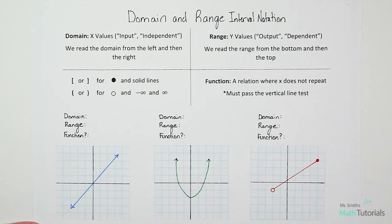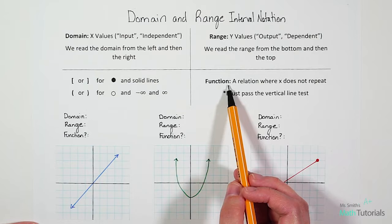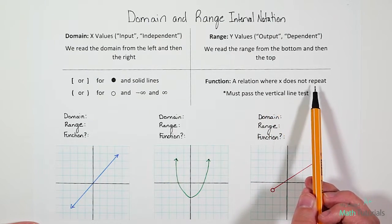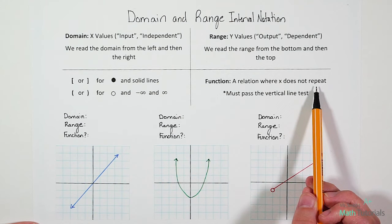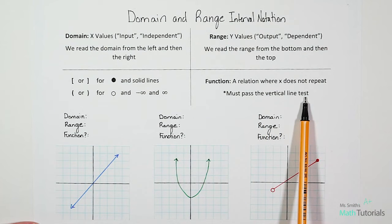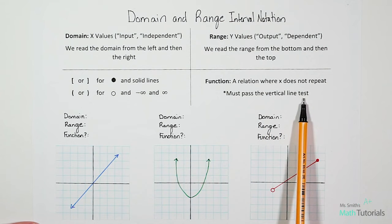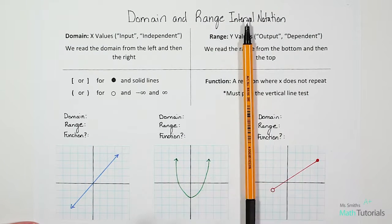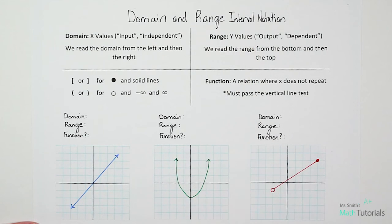A function is a relation where x does not repeat. Each of our graphs, in order to be a function, has to pass the vertical line test. We use a vertical line test to see if the graph crosses our pen more than once when we hold our pen in a vertical line. It's a little easier to understand once we actually see it in a problem, so let's dive right into some examples.